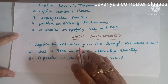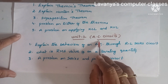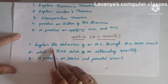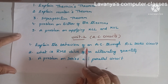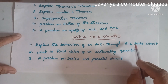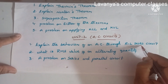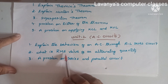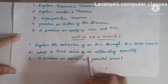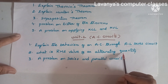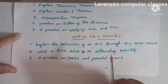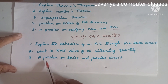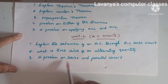Unit 2 is AC circuits. The important questions are: explain the behavior of AC through an RL series circuit; what is the RMS value of an alternating quantity — an important question; and a problem on series and parallel circuits.